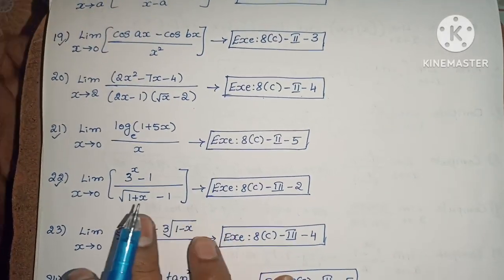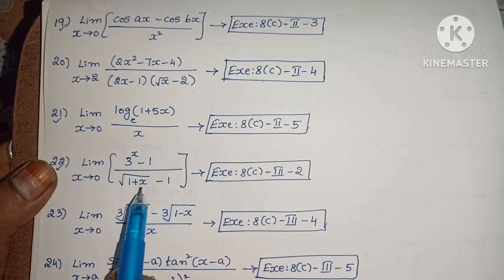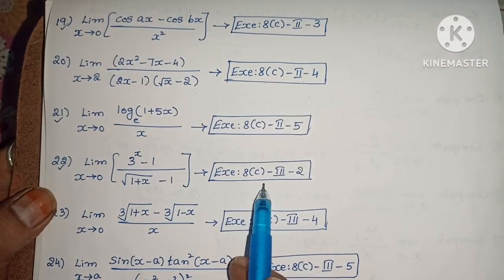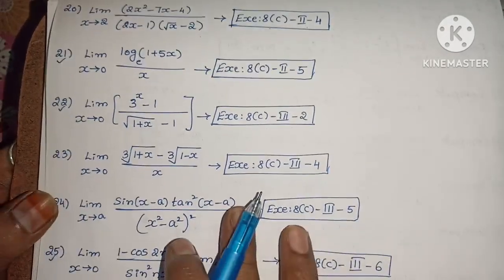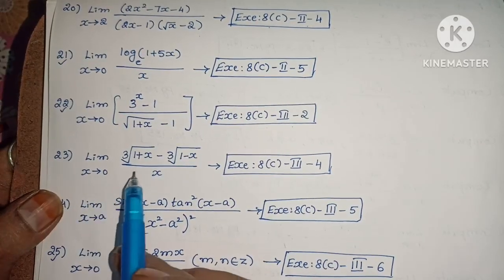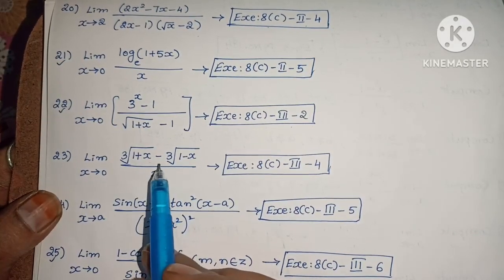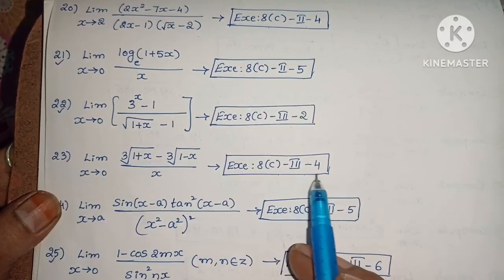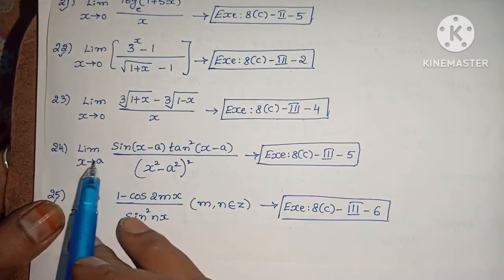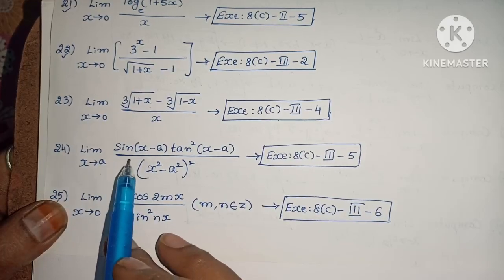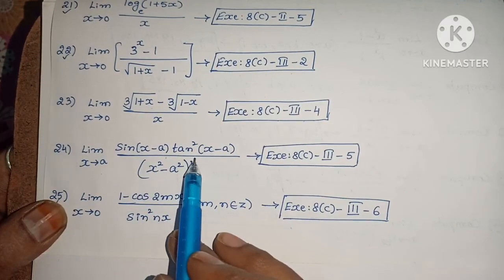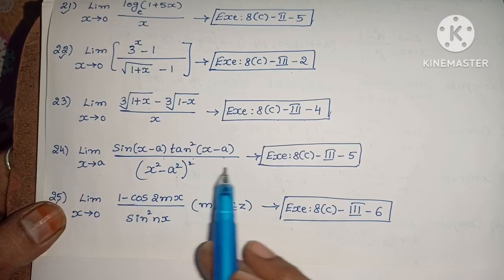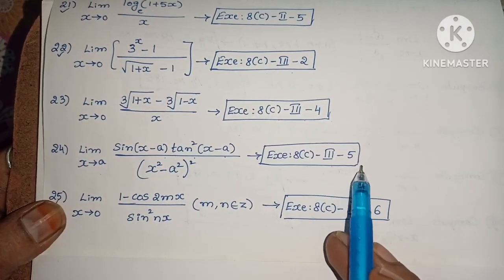Next: Limit extends to 0 of 3 power x minus 1 by root of 1 plus x minus 1. Exercise 8c, third roman law, second one. Next: Limit extends to 0 of qth root of 1 plus x minus qth root of 1 minus x by x. Exercise 8c, third roman law, fourth one. Next: Limit extends to a of sin of x minus a into tan squared of x minus a by x squared minus a squared whole squared. Exercise 8c, third roman law, fifth one.